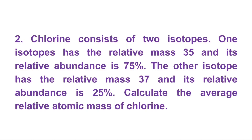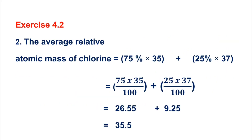For chlorine, mass number 35 is one isotope and mass number 37 is the other isotope. Isotope with mass 35 has relative abundance 75%, and isotope with mass 37 has relative abundance 25%.